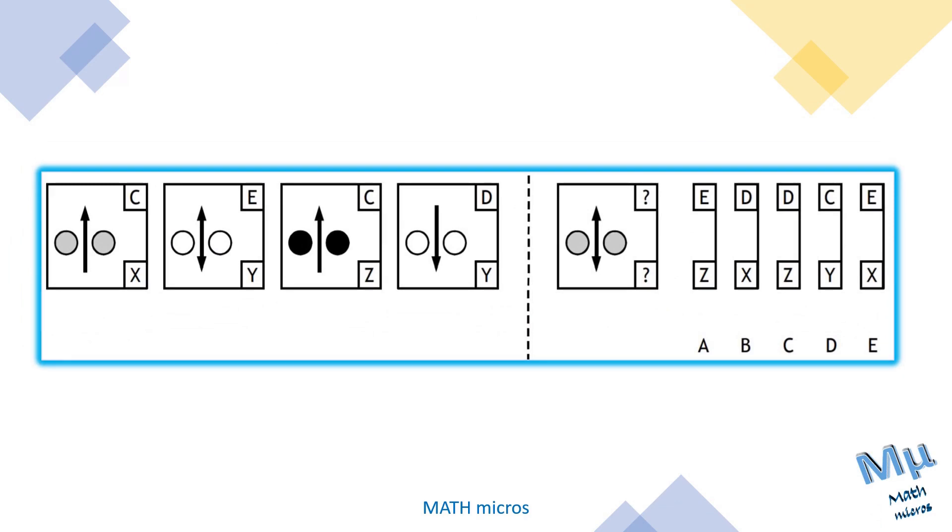Here is the first box code question. Before solving this, we need to understand the layout. This has a vertical line in the middle. You have four boxes to the left of the vertical line, and in each box you have shapes or symbols as well as codes or alphabets attached to it. To the right of the vertical line you have one box where only the shape is there but the letters are missing. You need to find the correct option from five choices: A, B, C, D, E.